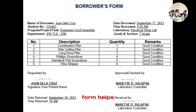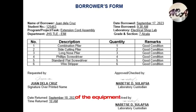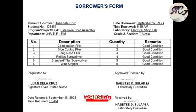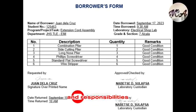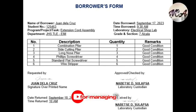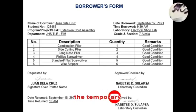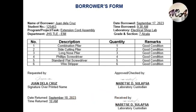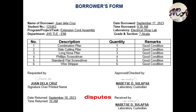This form helps establish a clear record of the equipment lending process, including the terms of the loan and responsibilities of both parties. It is a useful tool for managing the temporary use of equipment, ensuring accountability, and preventing disputes or misunderstandings.